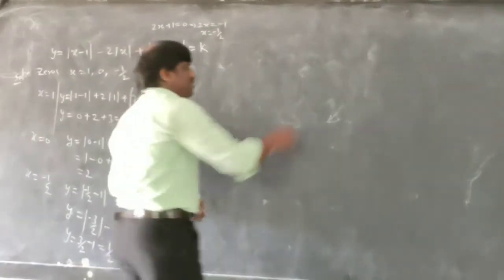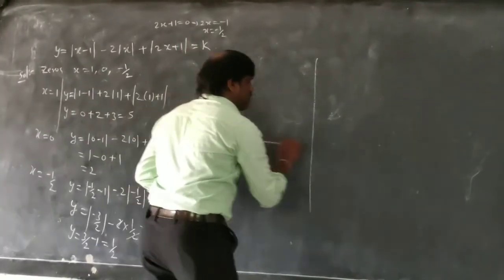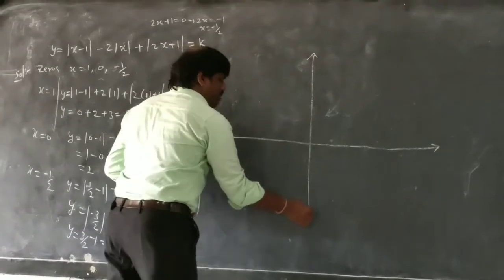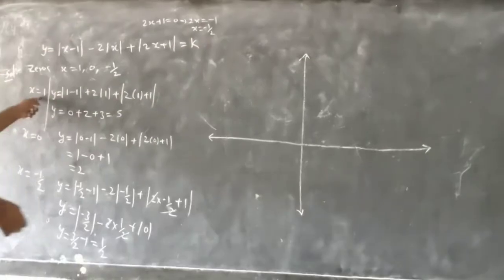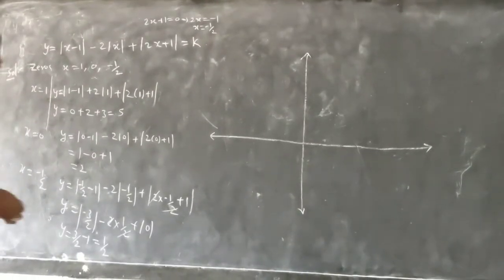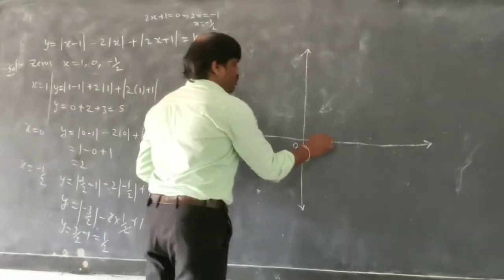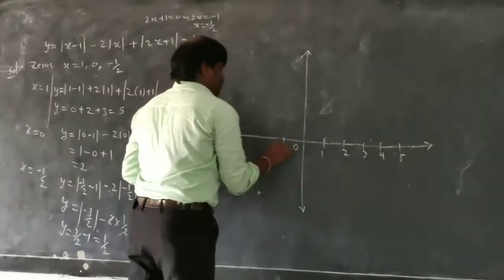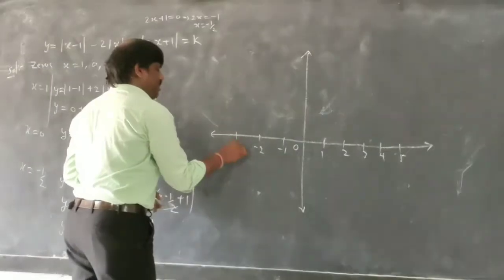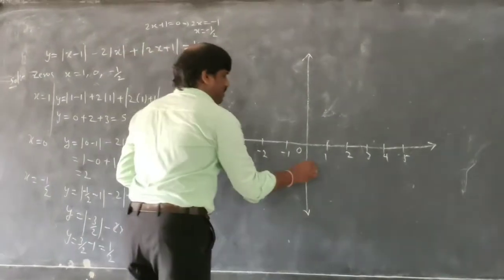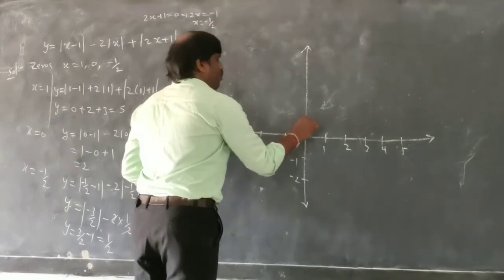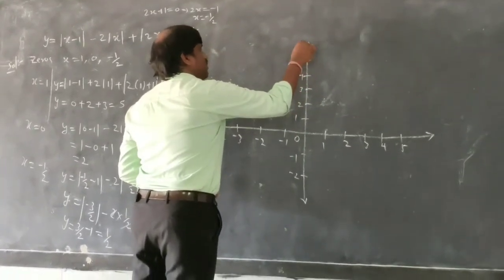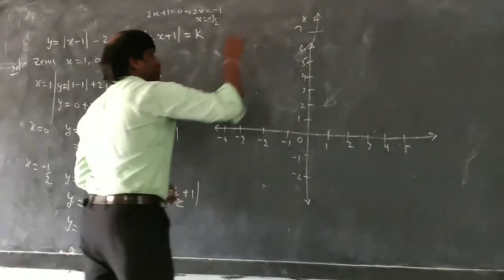Let us start the graph of this function. Take the x-axis and y-axis and mark the points. On the x-axis mark 0, 1, 2, 3, 4, 5 and minus 1, minus 2, minus 3, minus 4. On the y-axis mark 1, 2, 3, 4, 5, 6, 7, 8 and so on.